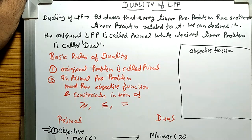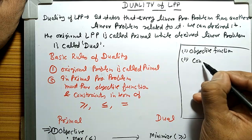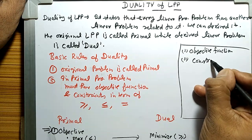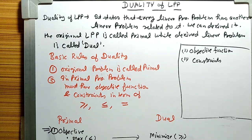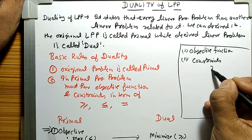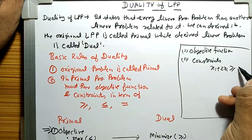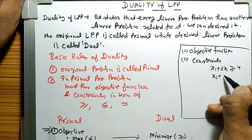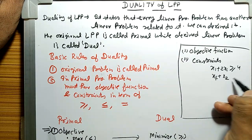The other part is the constraints, which are the decision equations or inequalities. For example, equations such as 2x1 + 2x2 or 2x1 + x2, expressed as inequalities with greater-than-or-equal-to or less-than-or-equal-to signs.